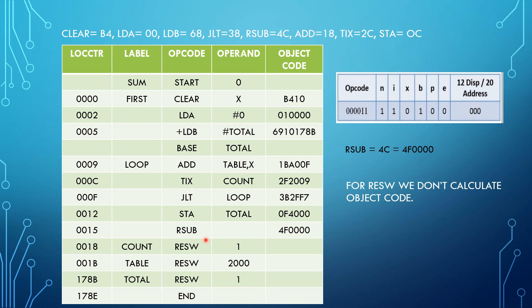Next we have RSUB. It is a Type 3 instruction format. The RSUB mnemonic value is 4C, with most significant bits taken for the opcode. There is no operand, so the NIXBP values are taken as 0. E is 0 for Type 3, and the displacement is set to 0. The object code is 4F0000.